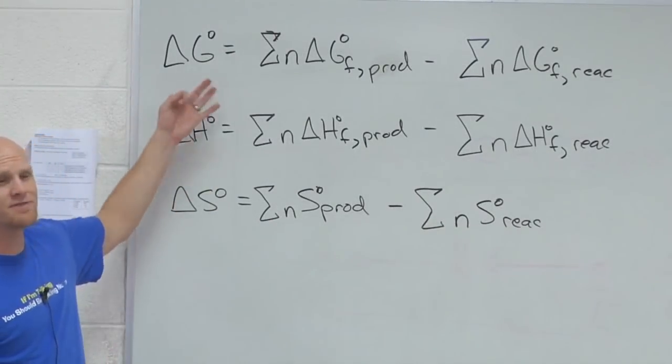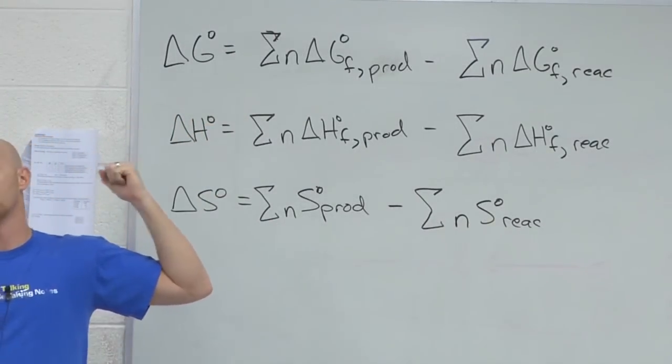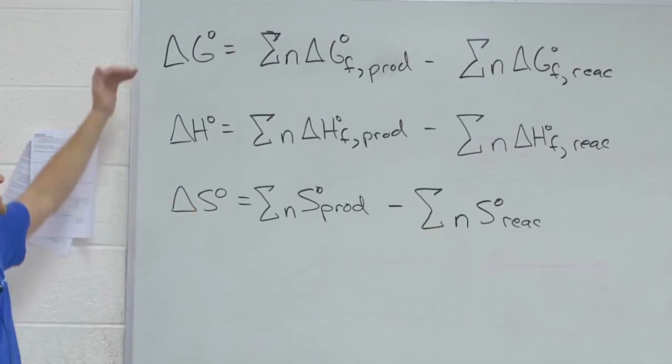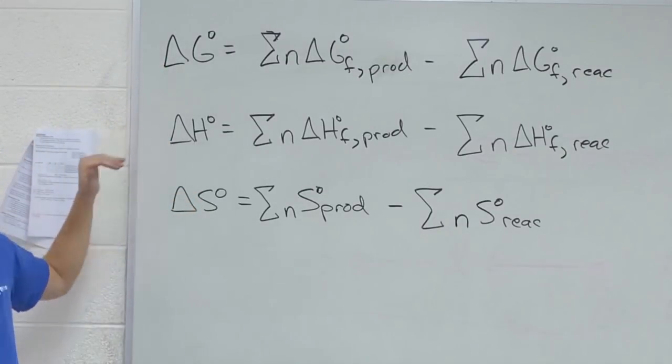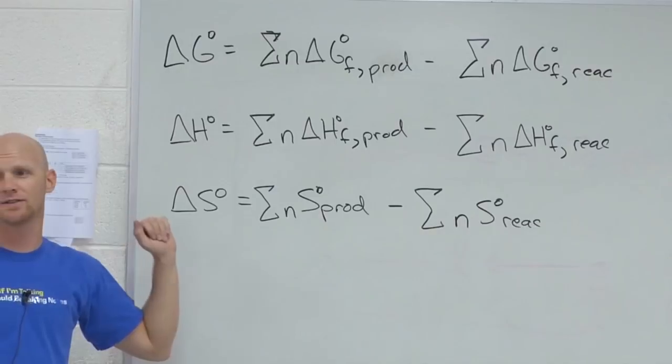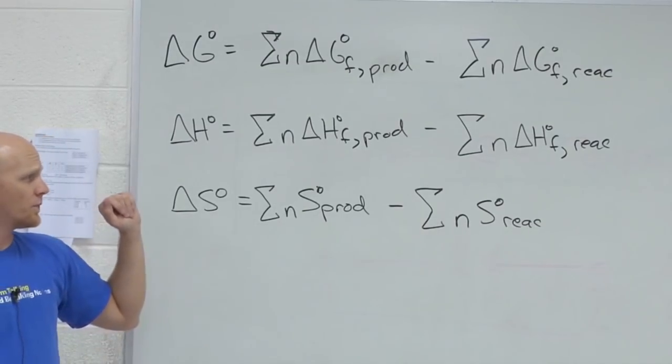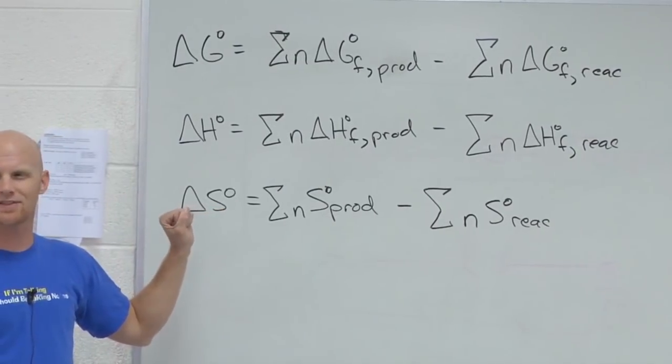Alright, these are right off your handout. You've got three very similar looking equations. These are all ways of calculating either delta G of a reaction, delta H of a reaction, or delta S of a reaction. Notice, these are all very similar, but which one is not like the others?